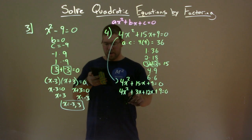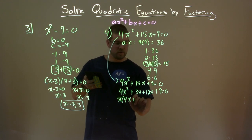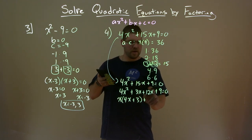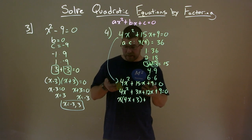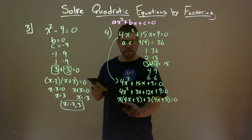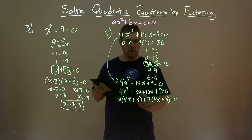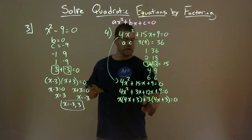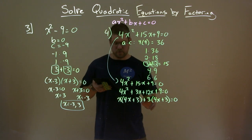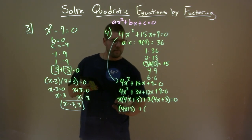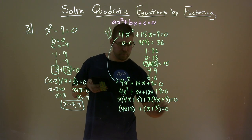Now we pull out common factors. From the first two terms, we pull out x and we're left with 4x plus 3. From the last two terms, 12x and 9 both have a factor of 3, so we pull out a 3 and we're left with 4x plus 3. Notice the 4x plus 3 repeats. So we pull out 4x plus 3 from both parts, leaving x plus 3.